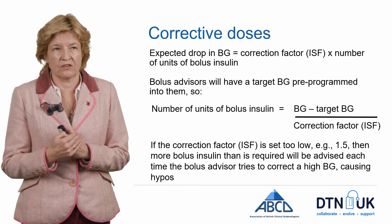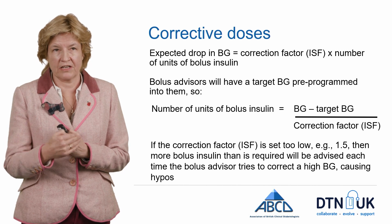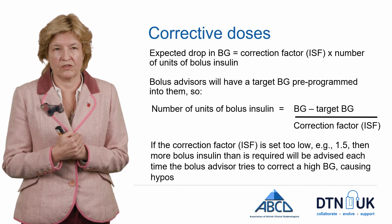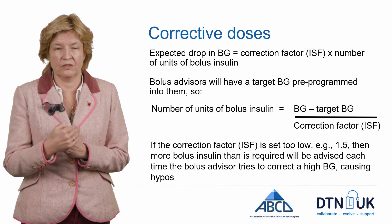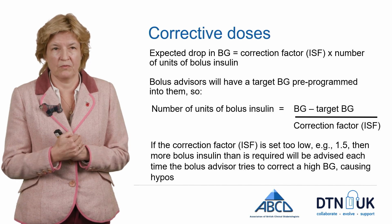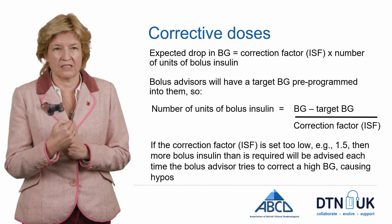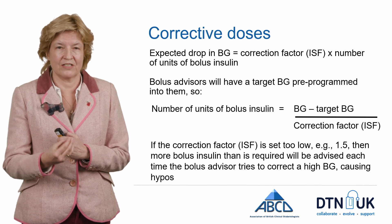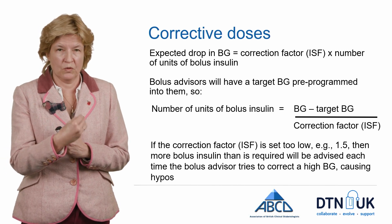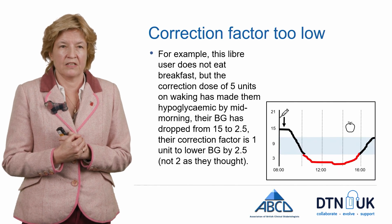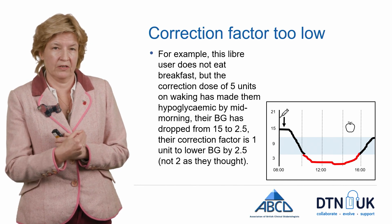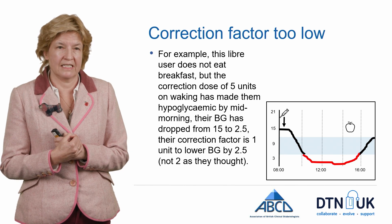The expected drop equals the correction factor multiplied by the number of units given. Bolus advisors will have a target blood glucose pre-programmed — in this example the target was 5, the blood glucose was 15 — you divide by the correction factor and you end up with 5 units. But if the correction factor is set too low, because we're dividing by it, you'll end up giving even more corrective insulin. The danger of that is that you can become hypoglycemic. So if when you correct you find that you're going hypoglycemic often, it usually means your correction factor is set too low.